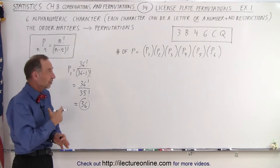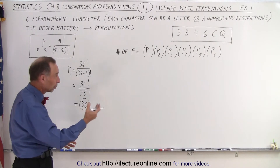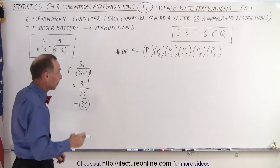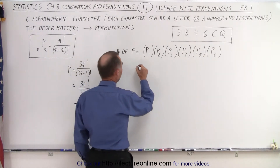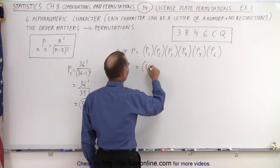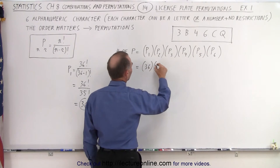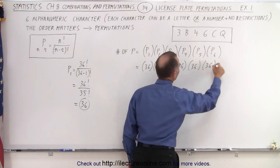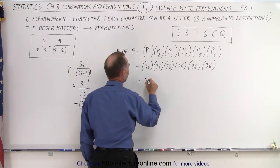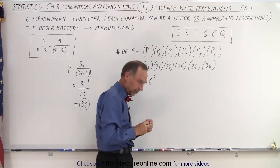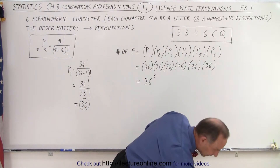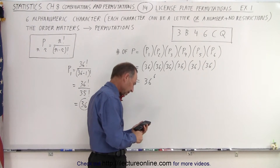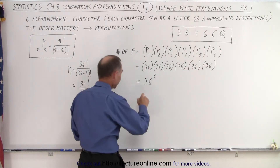That's going to be exactly the same for the second, third, fourth character, and so on, because the outcome of the first character does not affect the outcome of the ones following. So essentially this is going to be equal to 36 × 36 × 36 × 36 × 36 × 36, which equals 36 to the sixth power.